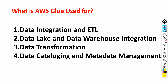The second use case is data lake and data warehouse integration — you can integrate AWS Glue with data lakes and data warehouses to create a metadata repository and catalog tables for your data. Third is data transformation: if you need to do cleansing, enrichment, or transformations on your data, you can use AWS Glue jobs. Fourth is data cataloging and metadata management.